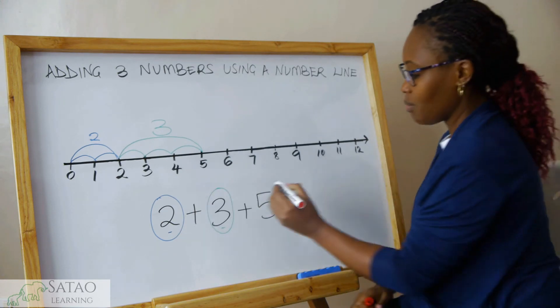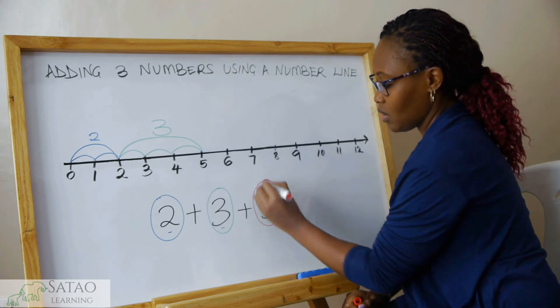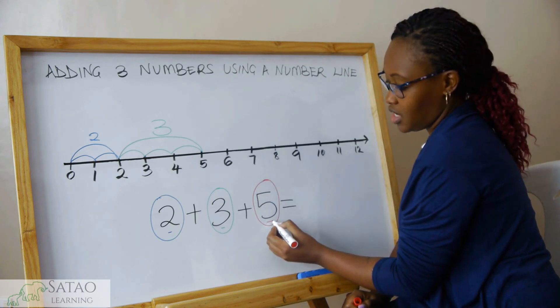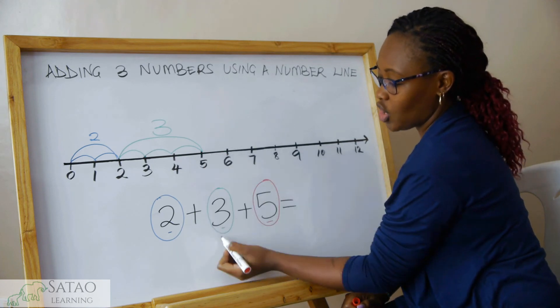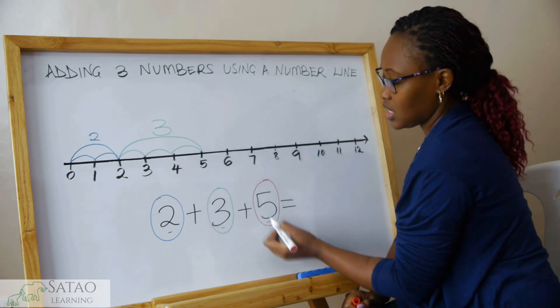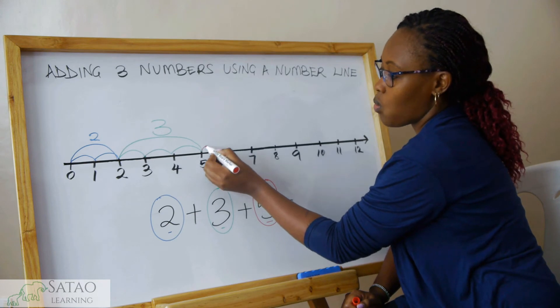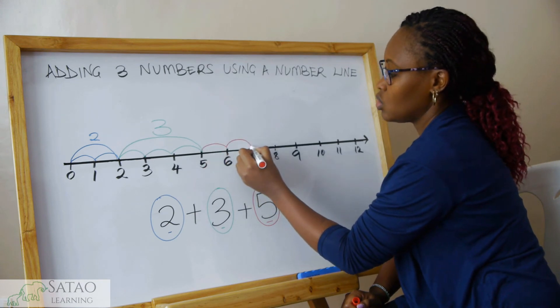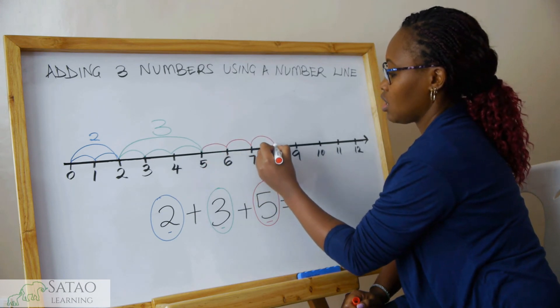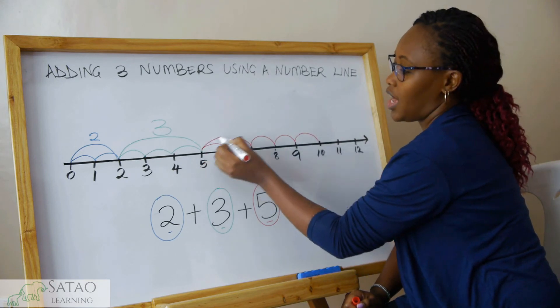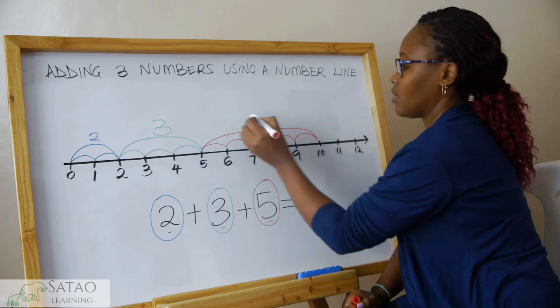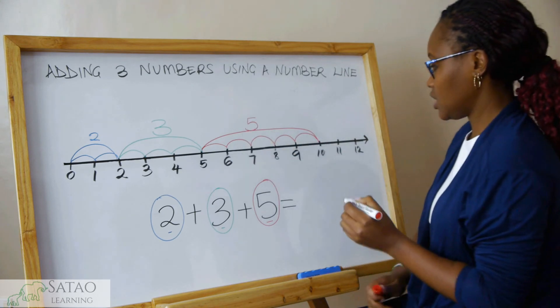Then we move and skip five steps because 5 is our third number. We start from where we finished off. We skip five: one, two, three, four, and five. Those are five steps.